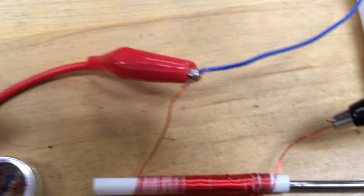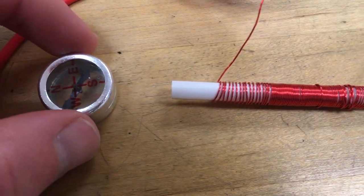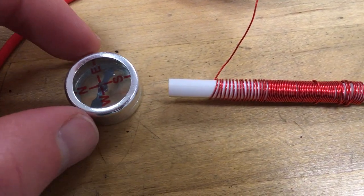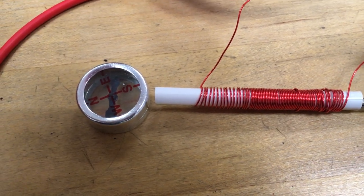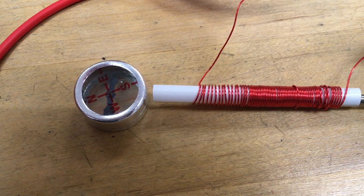And so as we bring the compass a little bit closer, a little bit closer, closer, you see that it deflects a little bit more to the left, away from the Earth's magnetic field direction.